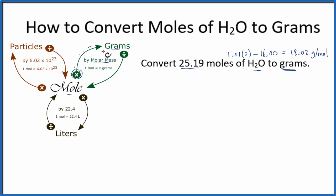So that's our molar mass, and that's our conversion factor. So we have 25.19 moles of H2O, and we multiply that by the molar mass. And we just found that to be 18.02 grams per mole.